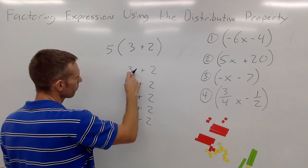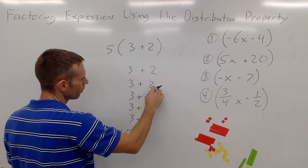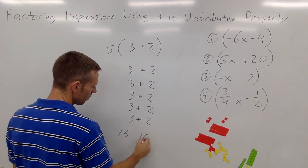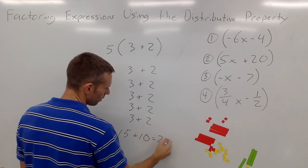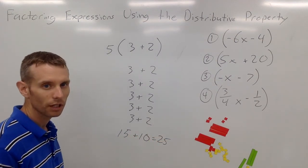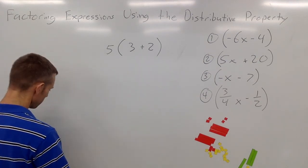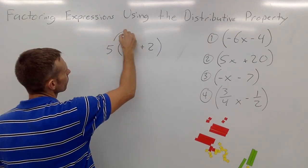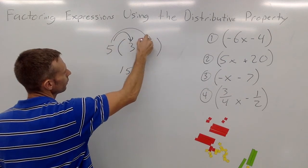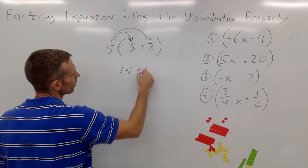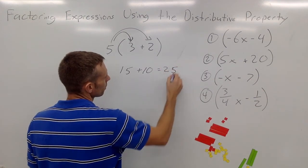If I were to add all this up: three, six, nine, twelve, fifteen, plus two, four, six, eight, ten — you can see that equals 25. The distributive property would save us that time and say here is five times three, that gives us 15; here's five times two, that gives us 10; 15 plus 10 equals 25.